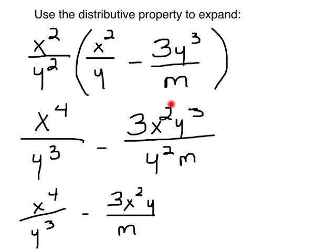3X squared Y cubed over Y squared M. Now what did I do here? This one stays the same, but this one looks a little different. I could simplify because I've got Y on the bottom and Y on the top. If I bring this 2 up, remember that it changes sign so it becomes negative 2. And then 3 minus 2 is Y to the 1st, or simply Y. That is as simplified as it's going to get.